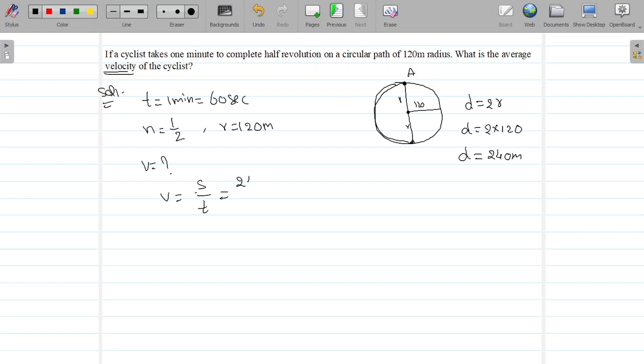Velocity equal to displacement by time. The displacement is 240 by time 60 seconds. 0 gets cancelled, 6-1, 6-4. Velocity is 4 meters per second.